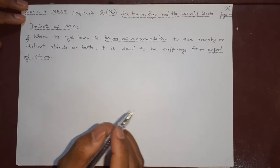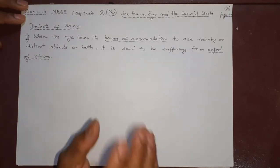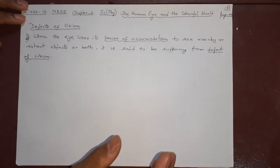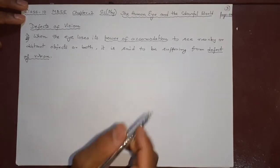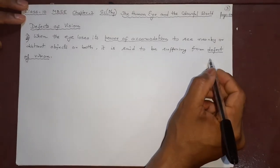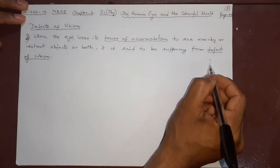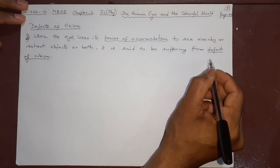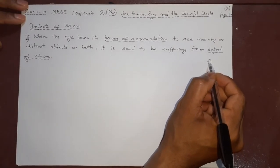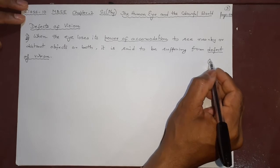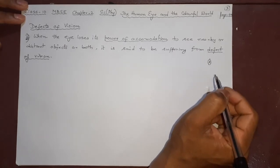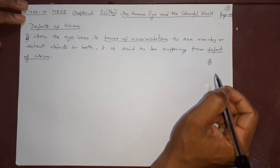Why does this happen? Because inside the eye we have the eye lens, which is a convex lens. If that lens is defective in some way, you are going to have a defective eye in one way or the other.